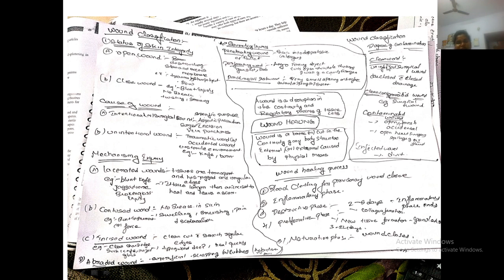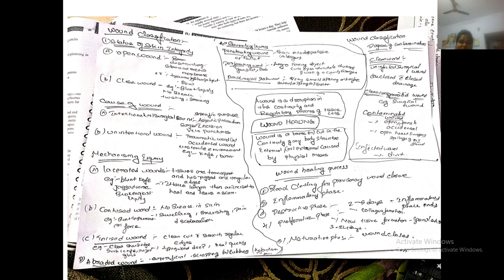By degree of contamination: clean wound — surgical wound with closed drainage system; clean-contaminated wound — surgical wound with minor contamination; contaminated wound — open wound with dirt particles, e.g., spillage of GI fluids; infected wound — contaminated with pathogens. So wound classification depends on status of skin integrity, cause, mechanism of injury, severity, and degree of contamination.